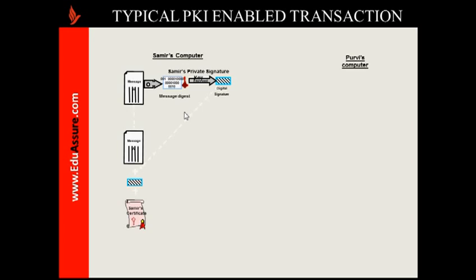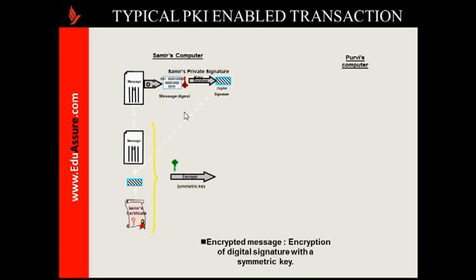A symmetric key is generated for this transaction only. This symmetric key is generated only for this particular exchange of message. Symmetric encryption algorithms are faster and more efficient compared to asymmetric key algorithms. So rather than using the key pair from the certifying authority for the larger chunk of message, a symmetric key is used to take advantage of that efficiency. This symmetric key is then applied and the message is encrypted.